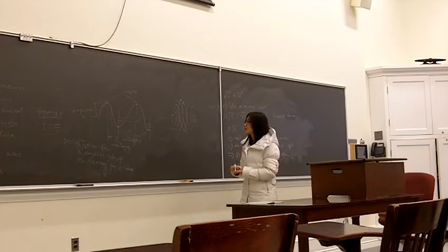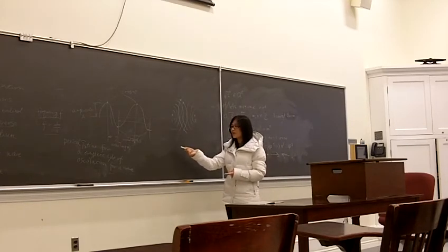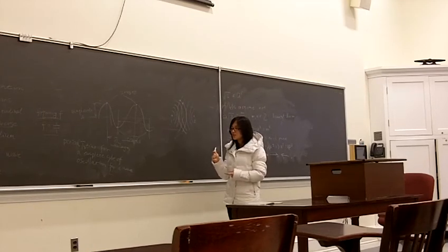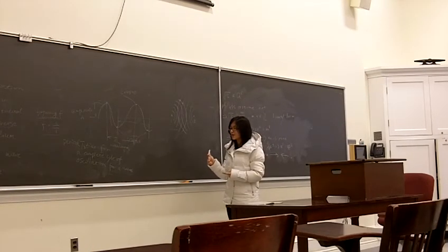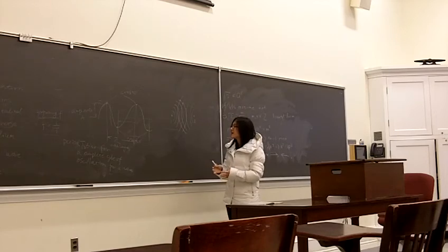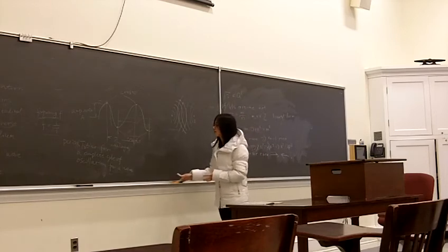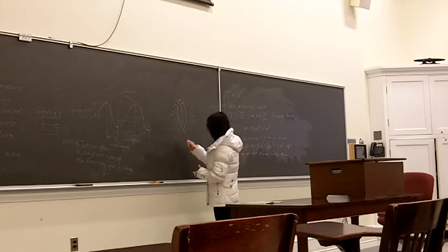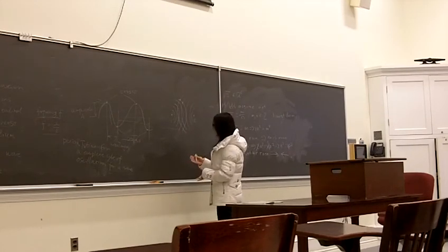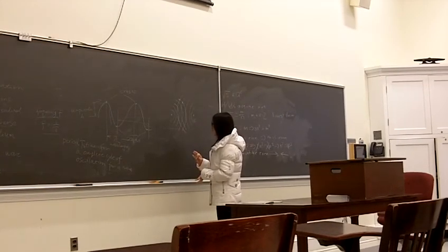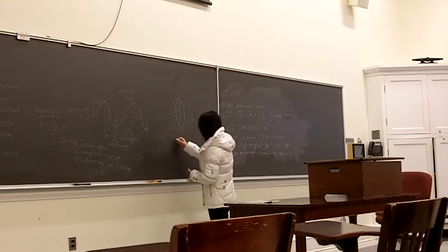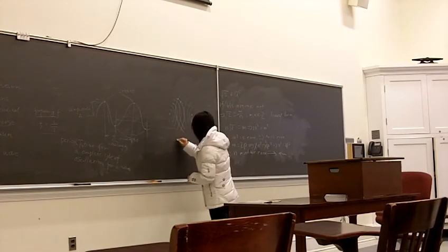One situation is one crest of a wave meets a trough of the other wave. In that case, that means a destructive interference happens, and that makes the total amplitude cancel with each other, like this.